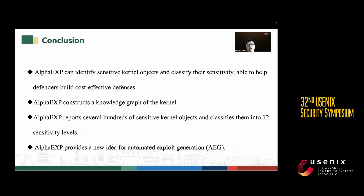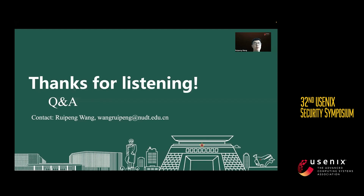In conclusion, Alpha EXP can identify sensitive kernel objects and classify their sensitivity, helping defenders build cost-effective defenses. Alpha EXP constructs a knowledge graph of the kernel and reports several hundreds of sensitive kernel objects, classifying them into 12 sensitivity levels. Finally, Alpha EXP provides a new idea for automated exploit generation — we can first generate an attack path and then generate the exploit to follow these paths. Thank you for listening; we are open for questions.